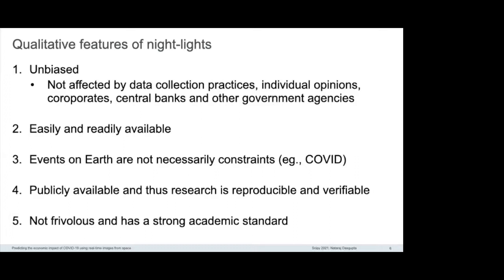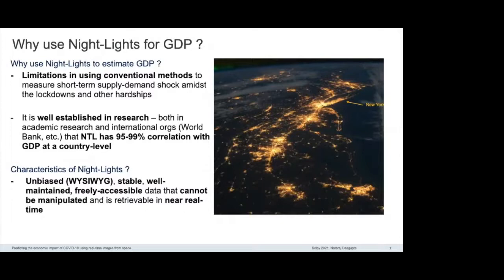Why use nightlights for GDP? First, there are limitations in using conventional methods to measure short-term supply-demand shocks amidst lockdowns. Second, it is well established in academic research and by international organizations that NTL nightlights has a 95 to 99% correlation with GDP at a country level — numerous research papers have conclusively proven this very strong correlation. Nightlights have characteristics that make them ideal: they're unbiased, stable, well-maintained, freely accessible, cannot be manipulated, and retrievable in near real time.